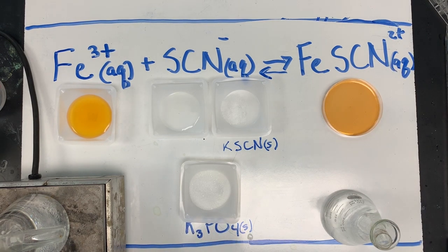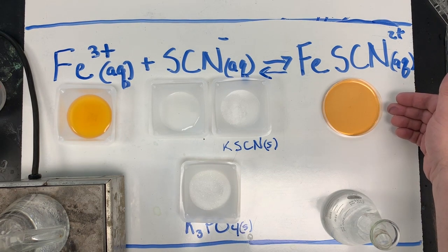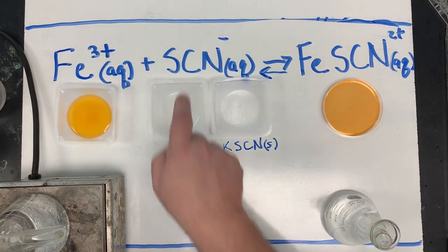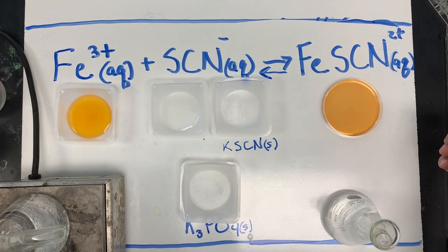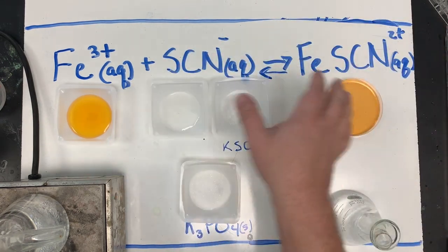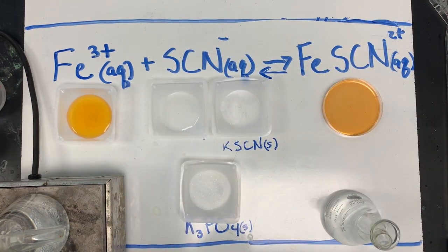Now that the solution is formed, let's play with the equilibrium. So in this dish, we have iron three plus, we have thiocyanate, and we have the complex ion that they form. They're in equilibrium moving back and forth. So we have all three substances there.